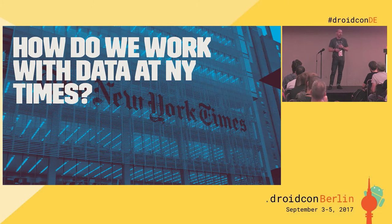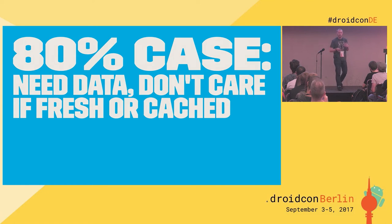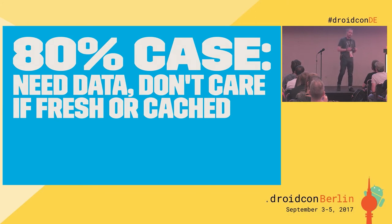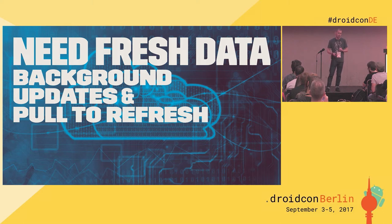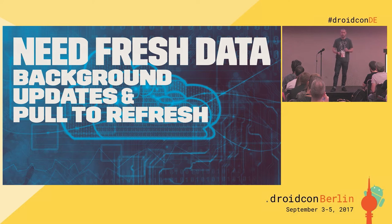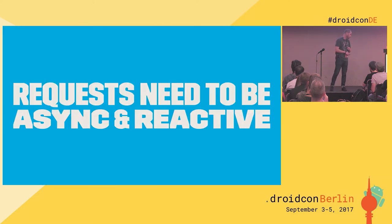How do we work with data at the Times? After thinking about it, we realized that 80% of the time we just want data — we don't care if it's fresh or cached on disk, we just want to get it and show it. The other use case is when you want fresh data: either through a background update, an alarm, or to facilitate a user's pull-to-refresh. And requests have to be asynchronous and reactive.